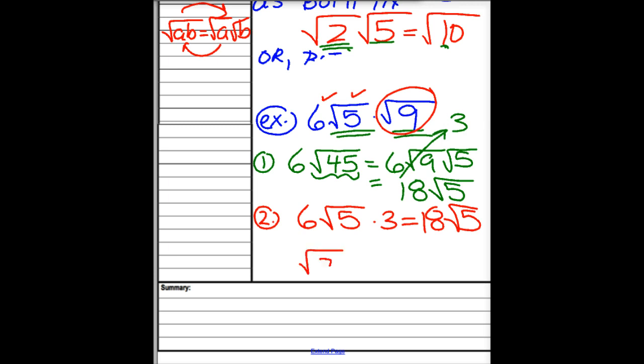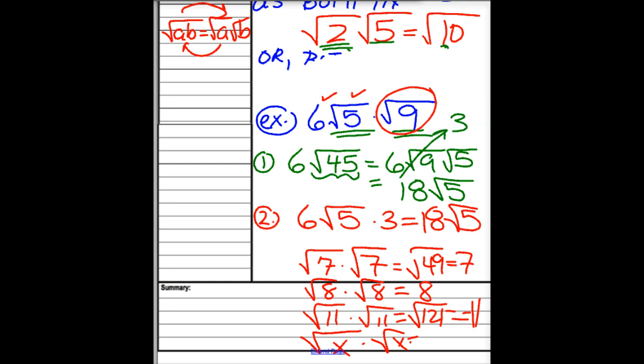So what do you do if you get this? Root 7, root 7 is root 49, which is 7. Watch this. Root 8, root 8 is root 64, which is 8. Root 11, root 11 is root 121, which is 11. Don't write this all down. Root X, root X is root X squared, which is just X. So anytime you're doing something like root 5, root 5, you're going to get root 25, which is 5. Or if you do root 14 squared, it's root 14, root 14, which is just 14. So those are kind of nice and easy to do.